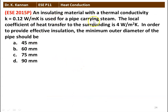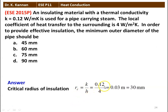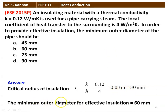Next question: an insulating material with thermal conductivity K = 0.12 watts per meter Kelvin is used for a pipe carrying steam. The local heat transfer coefficient to the surrounding is 4 watts per meter square Kelvin. In order to provide effective insulation, the minimum outer diameter of the pipe should be: (A) 45 mm, (B) 60 mm, (C) 75 mm, (D) 90 mm. The critical radius RC = K / H = 0.12 / 4 = 0.03 meter = 30 millimeter. The minimum outer diameter = 2 × RC = 60 millimeter. The answer is option B, 60 millimeter.